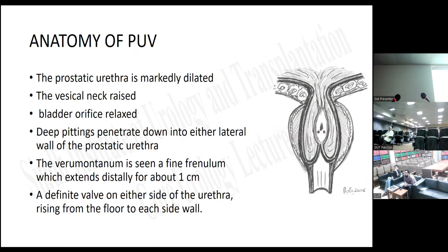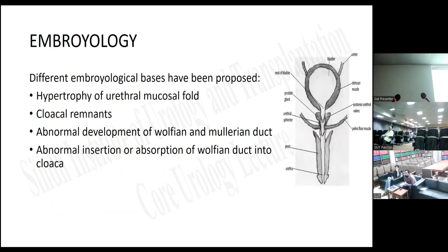Regarding anatomy of the posterior valve: the prostatic urethra is markedly dilated, the vesical neck is raised, the bladder orifice is relaxed, and deep pitting penetrates down into either lateral wall of the prostatic urethra. The verumontanum is seen, a fine frenulum extends distally for about one centimeter, and a definite valve is present on either side of the urethra rising from the floor of each side wall.